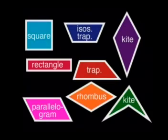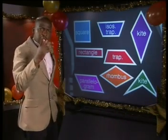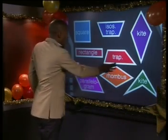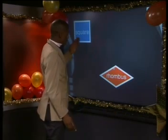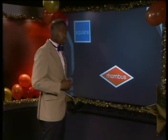Which of these shapes have all four sides equal? Only the square and the rhombus have all four sides equal.